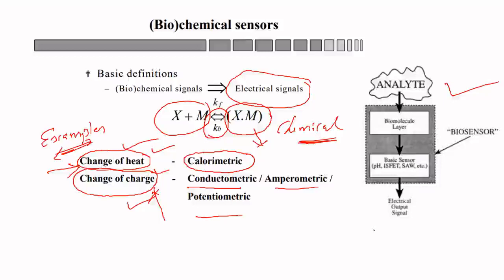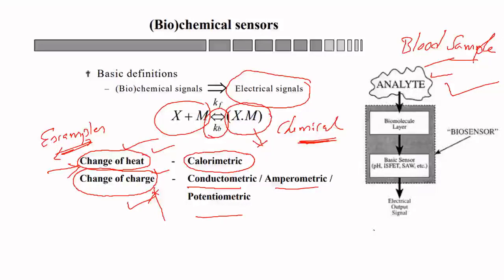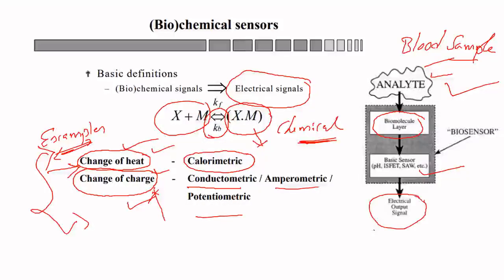As mentioned in this figure, the analyte is the blood sample. The blood sample passes through a biomolecule layer. After that we have several types of sensors. These sensors have the capability to convert chemical changes, converting that into an electrical output signal.